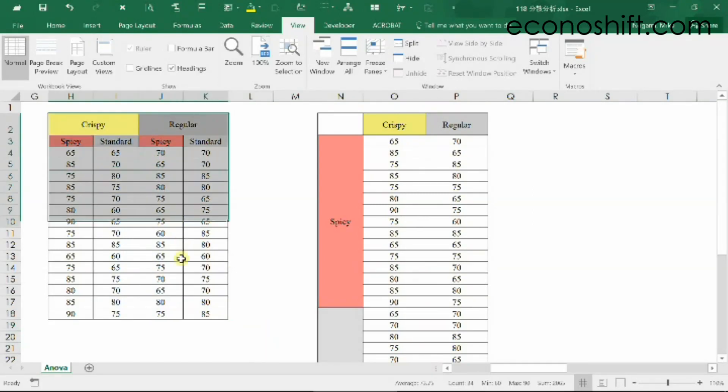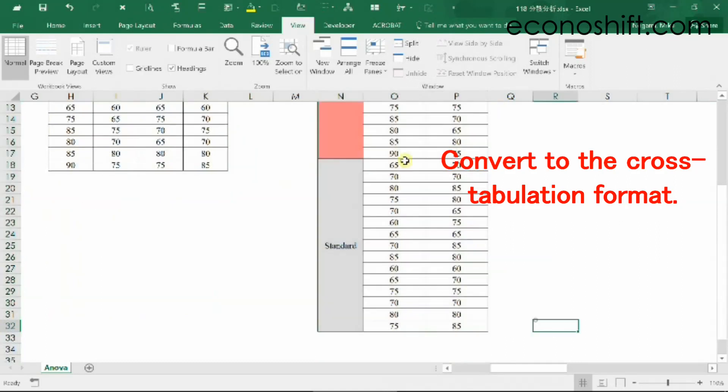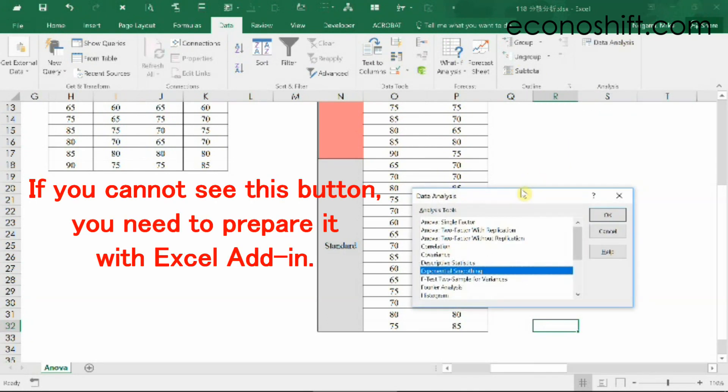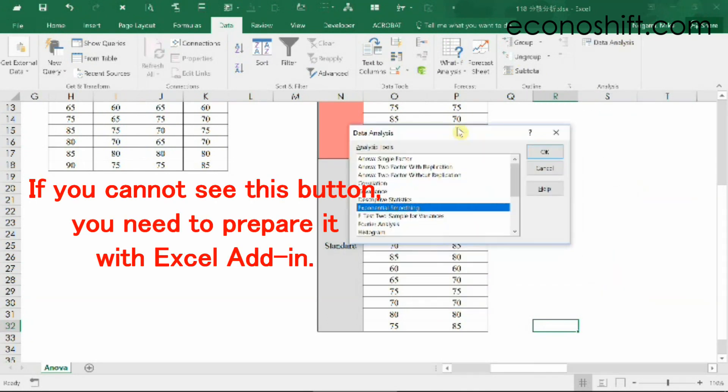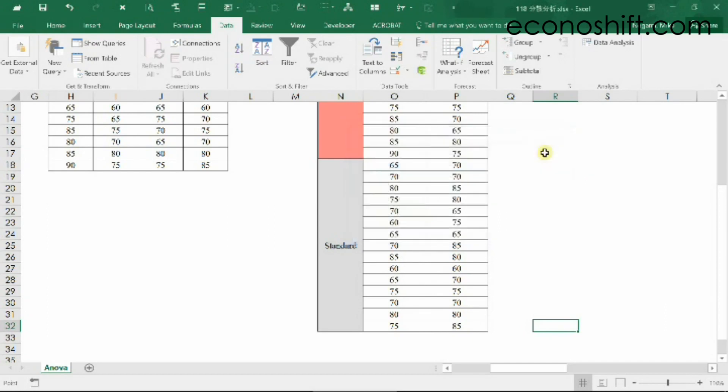For Excel's ANOVA tools, you need to convert the data format from the flat format to the cross-tabulation format like this. Select data and go to the right and click the data analysis button. If you cannot see this button, you need to prepare it with Excel add-in. Select ANOVA two factor with replication and click OK.